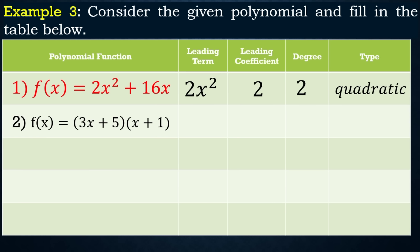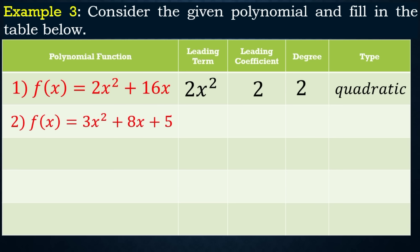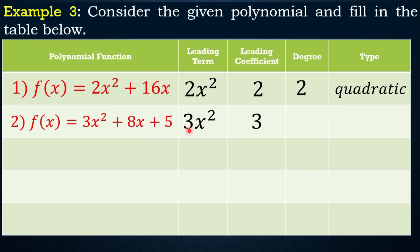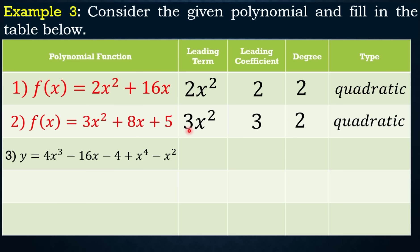For example 2, f(x) = (3x + 5)(x + 1). Expand using FOIL to get 3x² + 8x + 5. The leading term is 3x², the leading coefficient is 3, and the degree is 2, so this is also quadratic.